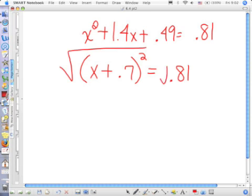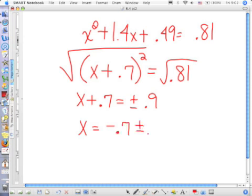Taking the square root of both sides I have x plus 0.7 equals plus or minus 0.9. And then subtracting 0.7 from both sides, it's negative 0.7 plus 0.9 which would be 0.2, or negative 0.7 minus 0.9 which would be negative 1.6. That was 21.